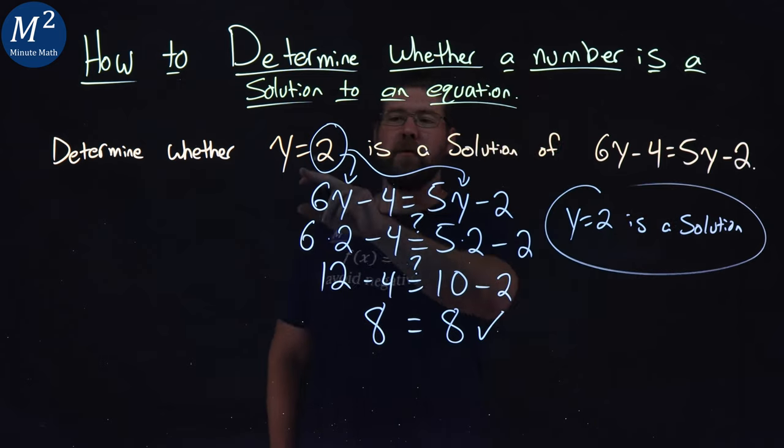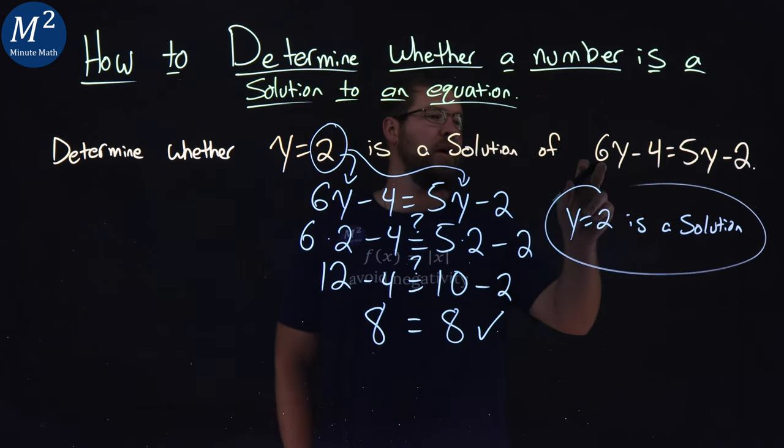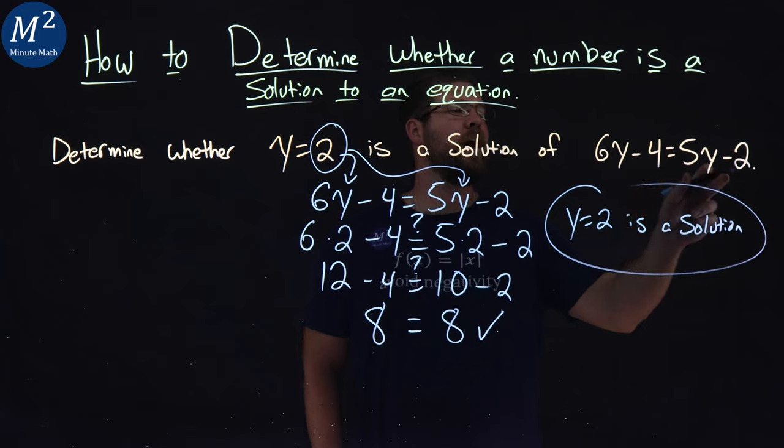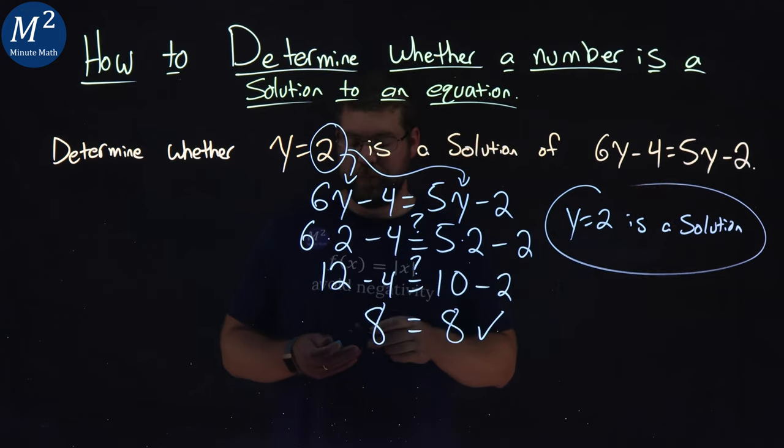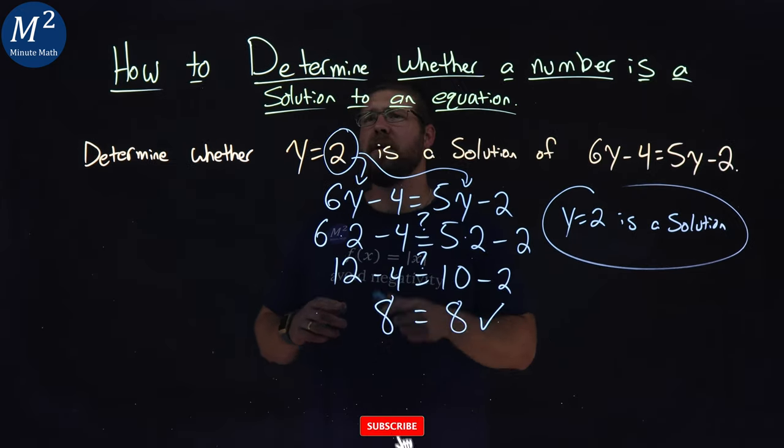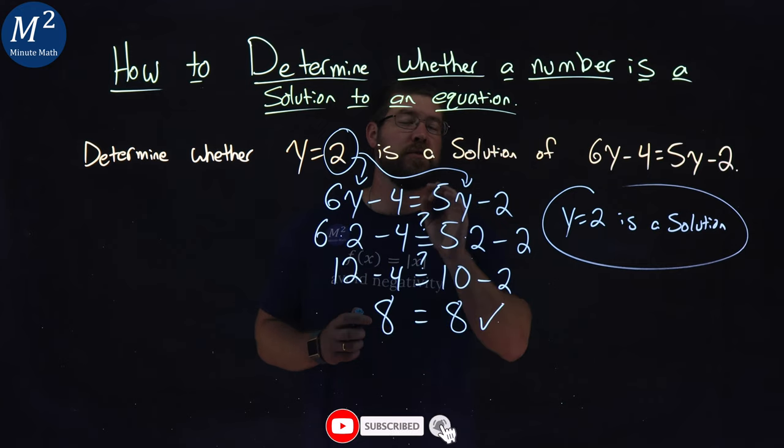And there we have it. y equals 2 is a solution of 6y minus 4 equals 5y minus 2. I hope you learned something here on how to determine whether a number is a solution to an equation.